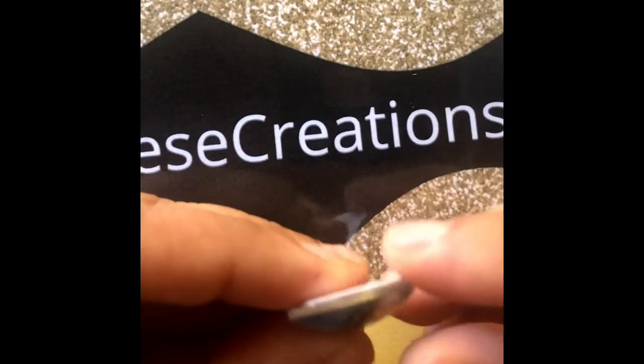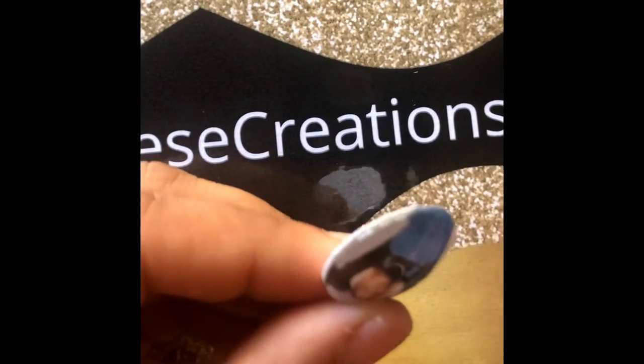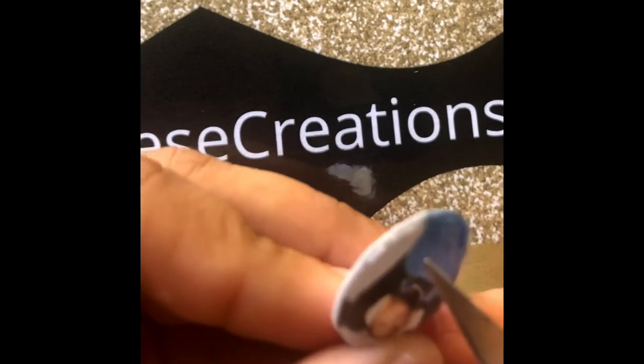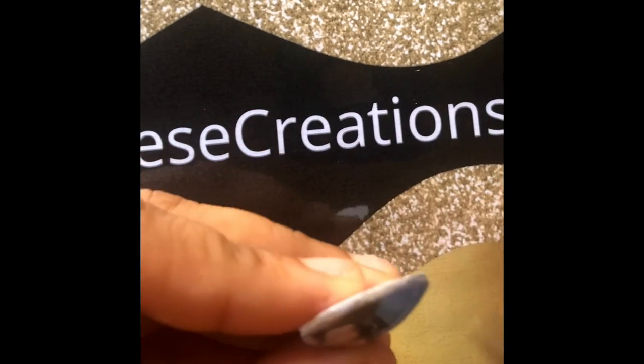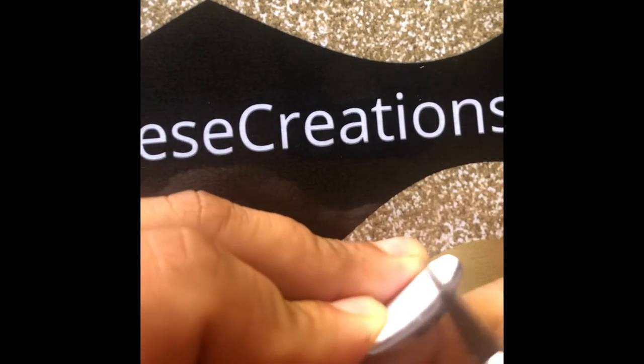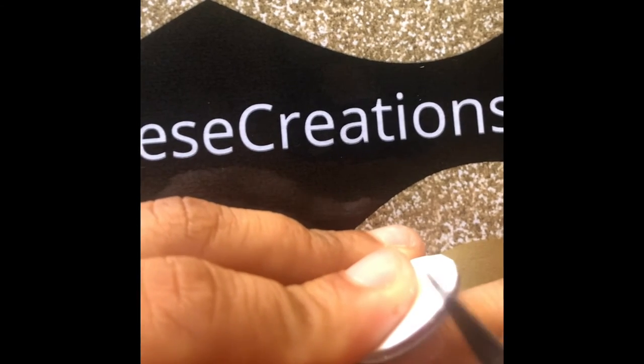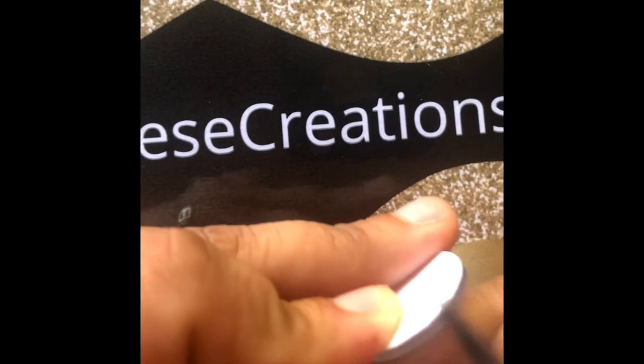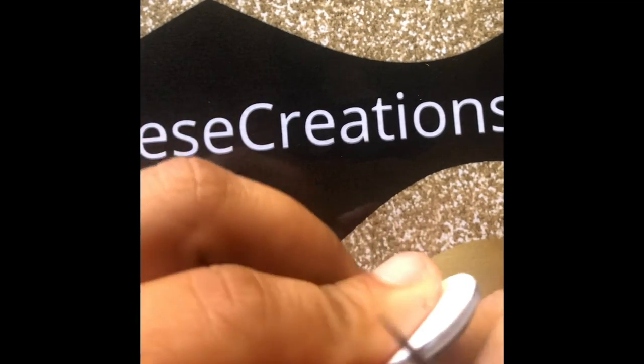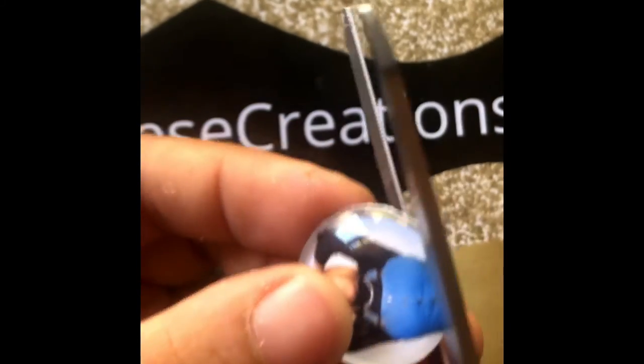Once I'm finished cutting, I do take my exacto knife and I go around my circle getting any dried up mod podge that's left on the edge. As you can see right now, sometimes depending on how long you leave it, it'll be caked on. Sometimes I even have to do it over if I've let the charm sit for too long.